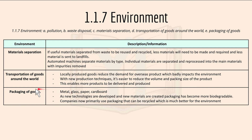For the packaging of goods: metal, glass, paper and cardboard are common packaging materials. As new technologies are developed and new materials created, packaging has become more biodegradable. Companies now primarily use packaging that can be recycled, which is much better for the environment — such as cardboard or paper.